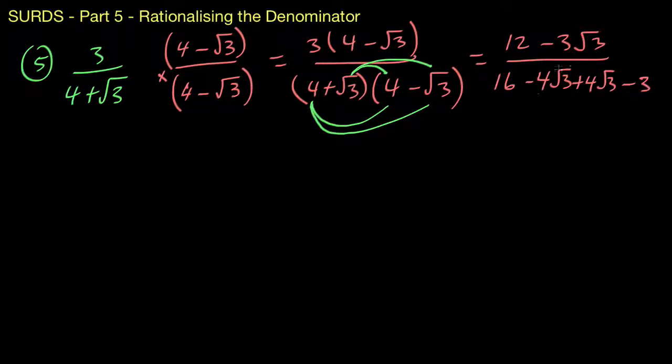So we've just lost our surds, which is exactly what we wanted. So moving down to a new line, we've got 12 minus 3 root 3 all over, and we've got 16 take away 3, so that's going to give you 13. That's your answer. We've got a rational denominator.